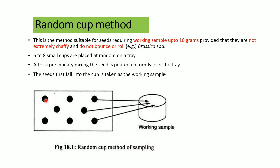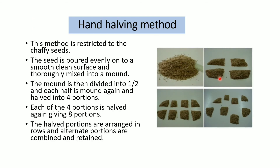The spoon method requires a tray and a spatula or spoon, and is used for small seed sizes. Preliminary mixed seeds are poured uniformly into the tray without disturbing them, and five random samples are taken from different places using the spoon or spatula as the working sample. In the hand-halving method, the submitted sample is formed into a mound, divided by hand into two equal parts, then into four, then into eight units, and alternate mounds are collected as samples.